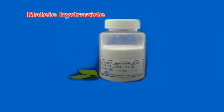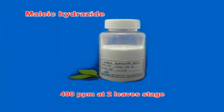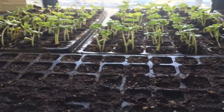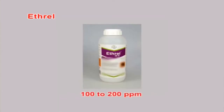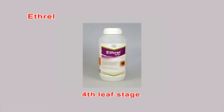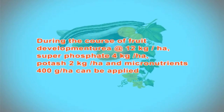Another important aspect in cucurbit seed production is foliar application of nutrients to enhance female flower production, since more female flowers lead to more seed set and seed production. Maleic hydrazide at 400 ppm should be sprayed at the 2 leaf stage and 5 leaf stage to enhance seed yield and quality, or ethephon at 100 to 200 ppm at weekly intervals from the 4th leaf stage for 4 times to increase female flowering. During fruit development, urea at 12 kg/ha, superphosphate at 4 kg/ha, potash at 2 kg/ha, and micronutrients at 400 g/ha can be applied.